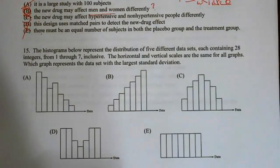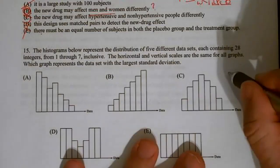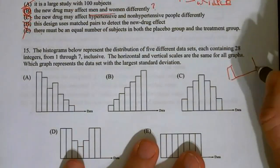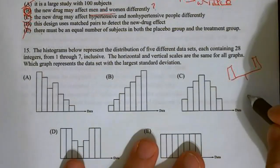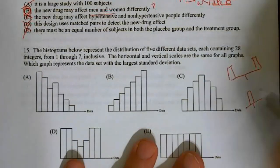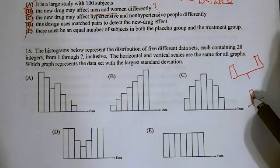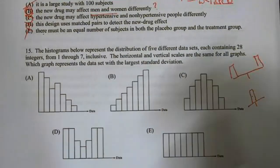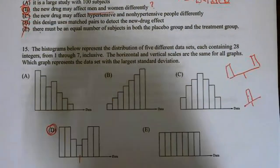Number 15. The histogram below represents a distribution of five different data sets, each containing 28 integers, one through seven. The horizontal and vertical scales are the same for all graphs. Which of the graphs represents the data with the largest standard deviation? The more data we have away from the center, the larger our standard deviation. So if I have something that looks like goalposts, I have the largest standard deviation. And if I have everything at one single point, I actually have a standard deviation of zero. The more in the center, the smaller, the more in the tails, the larger. This one has the most in the tails, most away from the center. So number 15 is D. It'll have the largest standard deviation.